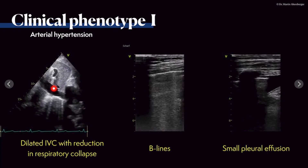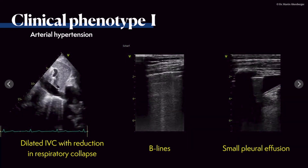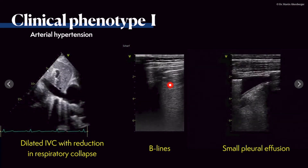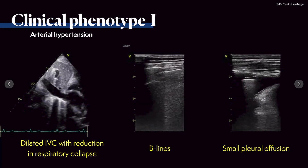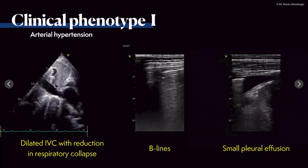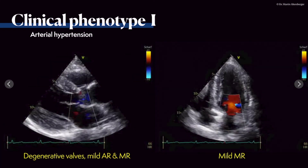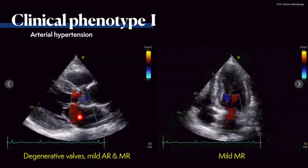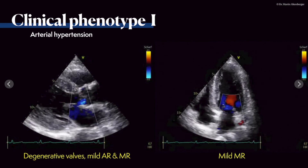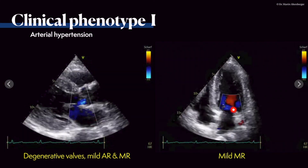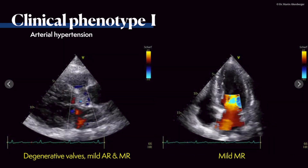Furthermore, the IVC is dilated with only a little bit of collapsibility while inhaling. Scanning the lungs shows some B-lines, indicating pulmonary congestion, and there is a small pleural effusion - the black space denoting free fluid in the pleural space. Evaluating the valves with color Doppler imaging shows probably mild mitral regurgitation and mild aortic regurgitation, which are common findings in patients with hypertensive heart disease.